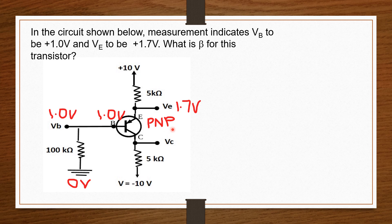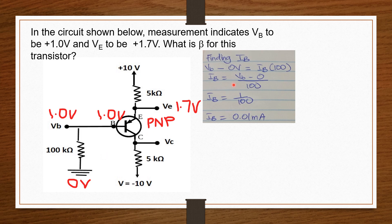Now that we know what we need about our transistor, we can find IB. The earth portion is 0 volts and the resistor is 100 kilo ohms. So we subtract VB minus 0 volts and divide by 100 kilo ohms to get IB. VB equals 1.0 volts, so IB equals 1 over 100, giving IB equals 0.01 milliamperes.